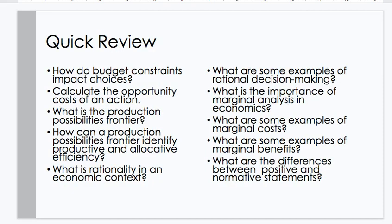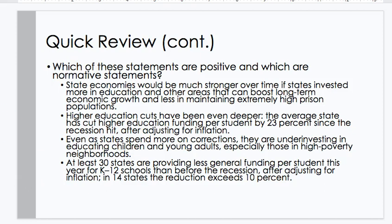Quick review: How do budget constraints impact choices? Calculate the opportunity costs of an action. What is the production possibilities frontier? How can a PPF identify productive and allocative efficiency? What is rationality in an economic context? What are examples of rational decision-making? What is the importance of marginal analysis in economics? What are examples of marginal costs and marginal benefits? What are the differences between positive and normative statements? Which of these statements are positive and which are normative? For example: 'State economies would be much stronger over time if states invested more in education and less in maintaining extremely high prison populations.' Higher education cuts have been deep — the average state has cut higher education funding per student by 23% since the 2007–2009 recession after adjusting for inflation. Even as states spend more on corrections, they are under-investing in education, children, and young adults, especially those in high-poverty neighborhoods. At least 30 states are providing less general funding per student for K-12 schools than before the recession.